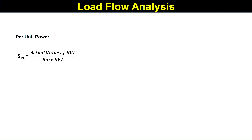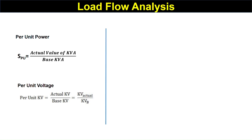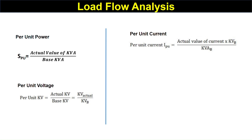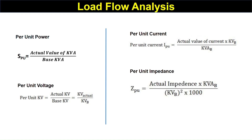Per unit power is equal to the actual value of power divided by the base kVA. Per unit voltage is equal to actual voltage divided by base voltage. Per unit current is actual current multiplied by base voltage, divided by base power. Per unit impedance is actual impedance multiplied by base power, divided by base voltage squared multiplied by 1000.